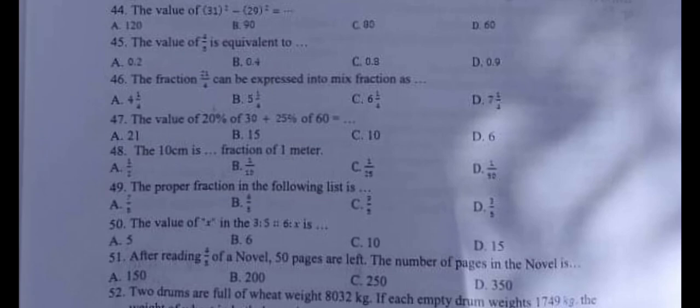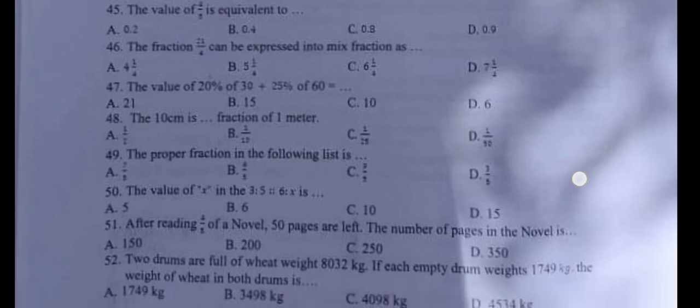20% of 30 will be 6 and 25% of 60 will be 15, so 6 plus 15 is 21. Correct option is 21.